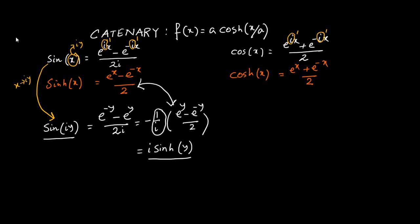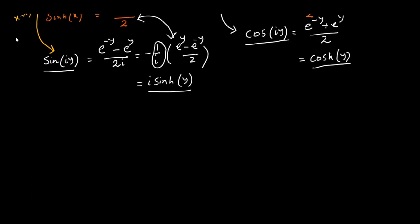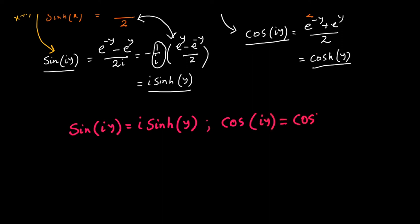Doing the similar treatment for the circular cosine case, replacing x by iy, we get cos(iy) = (e^(-y) + e^y) / 2, which is straight away hyperbolic cosine y. So cos(iy) = cosh(y). This gives us the formulas: sin(iy) = i·sinh(y) and cos(iy) = cosh(y).